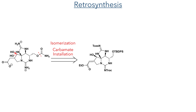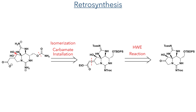Let's start by looking at the retrosynthesis. The first disconnections occur at the geminal diol and the pendant carbamate group. The diol could be constructed using an isomerisation of an alpha-beta unsaturated ester, and the carbamate could be installed using carbonyl diimidazole. The unsaturated ester required for this isomerisation could be introduced using a Horner-Wadsworth-Emmons reaction of a ketone.